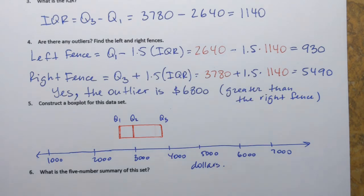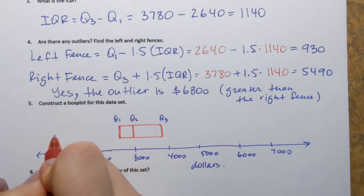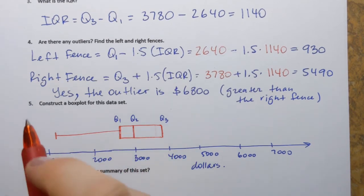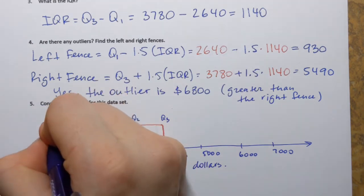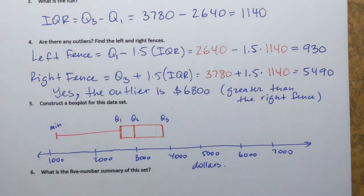And then I need to draw whiskers. So since we don't have any outliers on the left, the whisker will stretch down to the minimum value from the original data set, which is 1,111. So I would say down here. So that's the minimum value from the original data set.